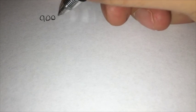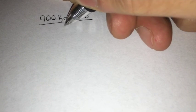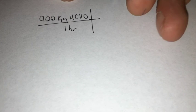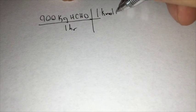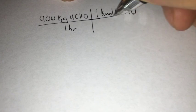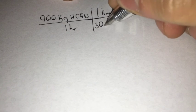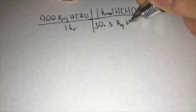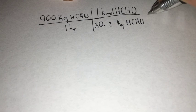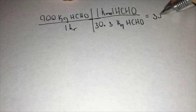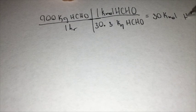Now, the first thing we do is calculate the number of kilomoles of formaldehyde formed per hour from its mass, which is 900 kg per hour. So we are going to have 900 kg HCHO in one hour times one kilomole of HCHO over 30.3 kg of HCHO, which is equal to 30 kilomoles of HCHO per hour.